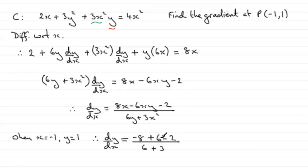So what we've got here now is minus 8 minus 2, which is minus 10, plus 6 is going to be minus 4, and that's divided by 9. So your gradient then is minus 4 ninths.